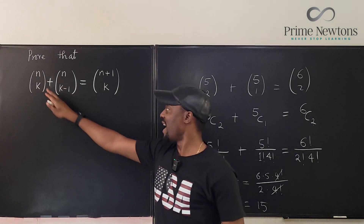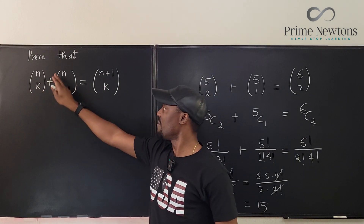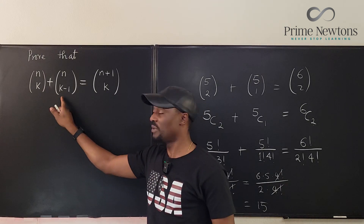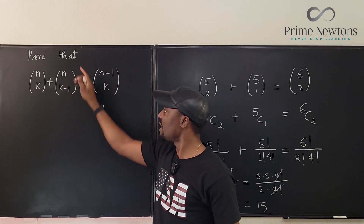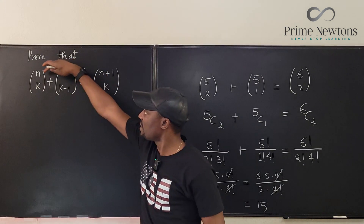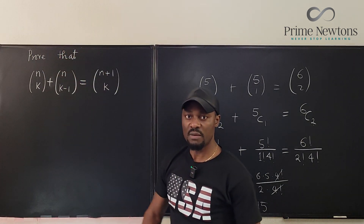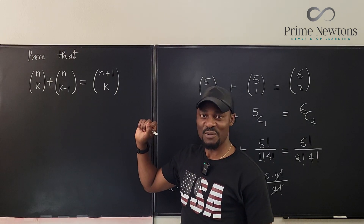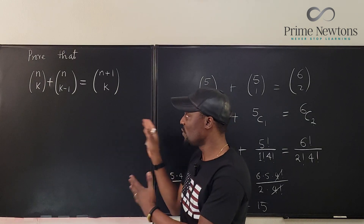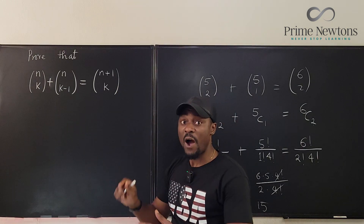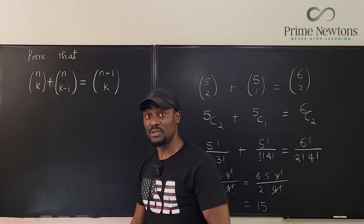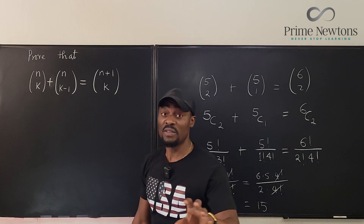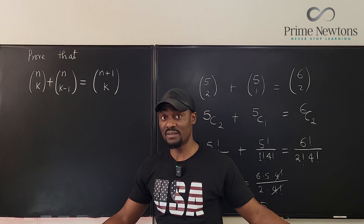So C(n,k) plus C(n,k-1) — you just drop this one step — is the same as increasing the original one step: C(n+1,k). Now this is a very easy proof to do. It's just that you have to know what you're looking for, otherwise things look confusing.